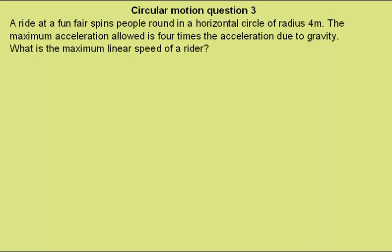What is the maximum linear speed of a rider? For this we can use that acceleration is equal to linear speed squared over radius. We can rearrange for the linear speed is equal to the square root of the acceleration times the radius.